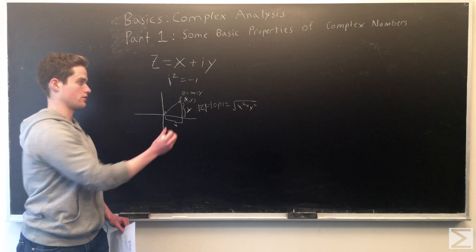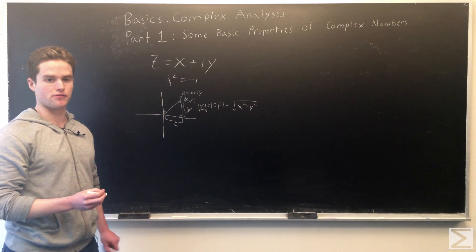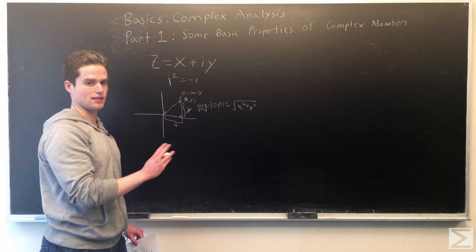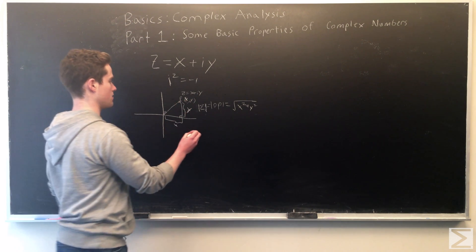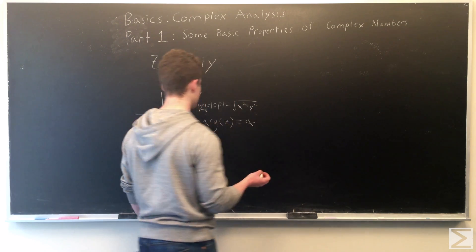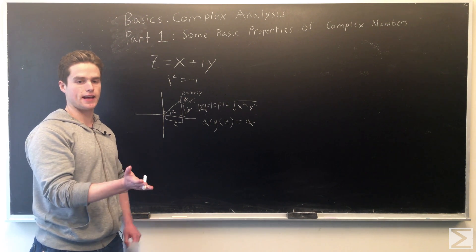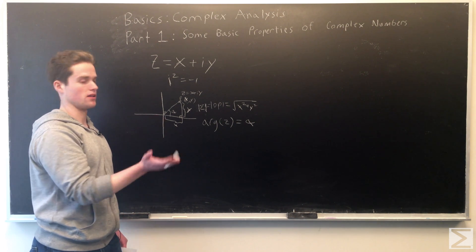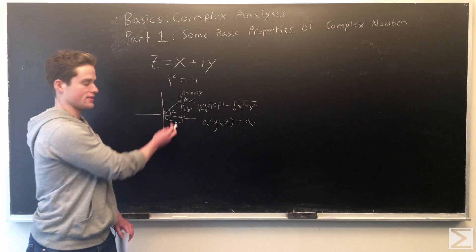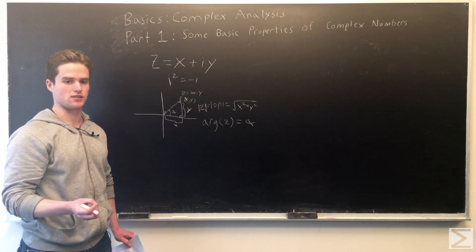Since we can make a right triangle with height y and base x, another thing we can define for z is the angle between the x-axis and this line OP. So we can define the argument of z as the angle going from the x-axis counterclockwise to our line. We call this angle alpha the argument of z.